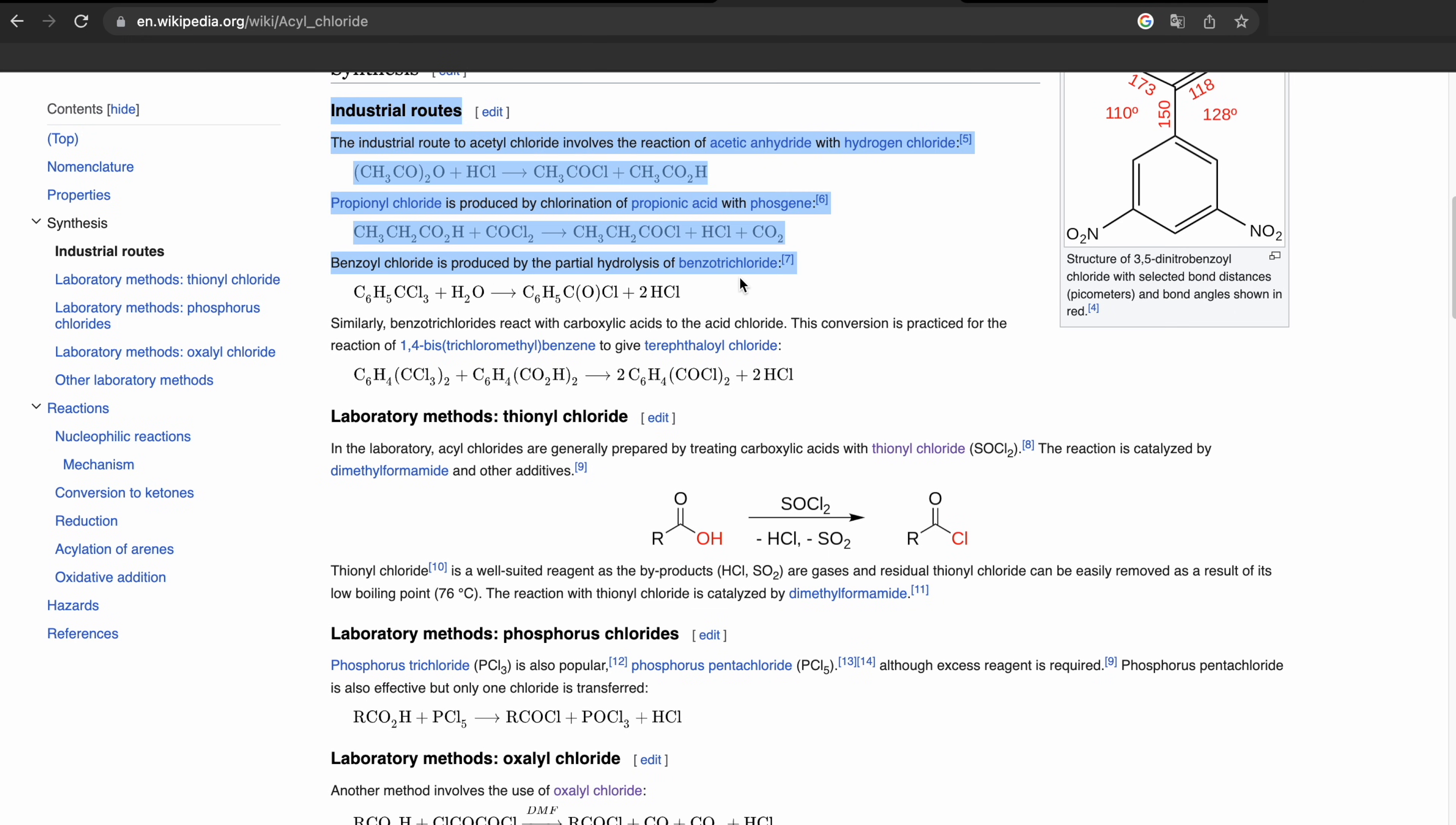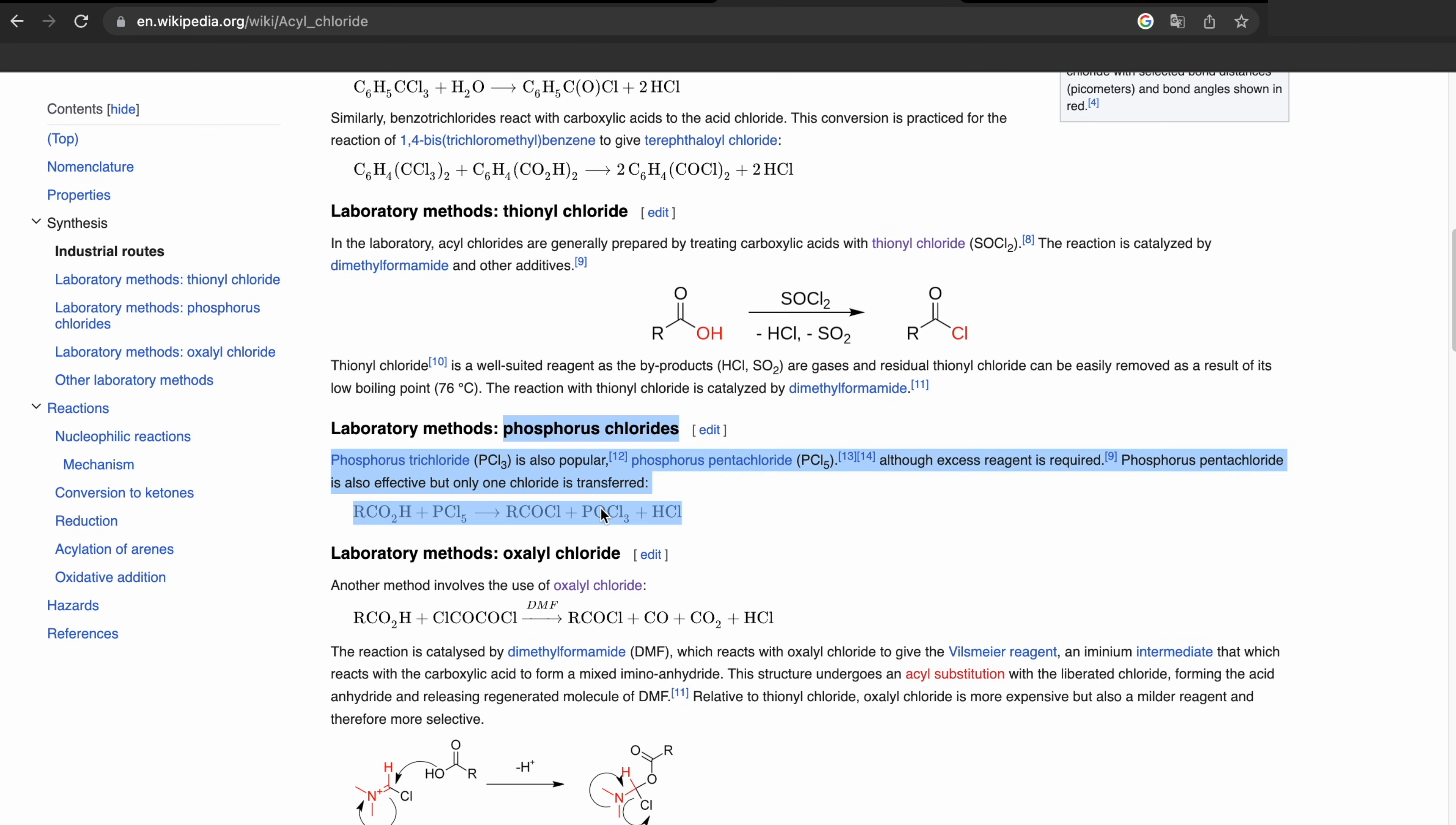The usual routes use an acid anhydride and HCl gas, but in the lab you also often use thionyl chloride because it's very convenient, phosphorus chlorides or other routes like oxalyl chloride.